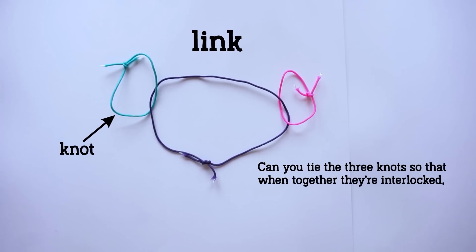Now we can reframe the question again as: can you tie the three knots so that when together they're interlocked, but if you remove one, the others fall apart? So far we've gotten rid of a bunch of information, but we haven't really isolated what's important.